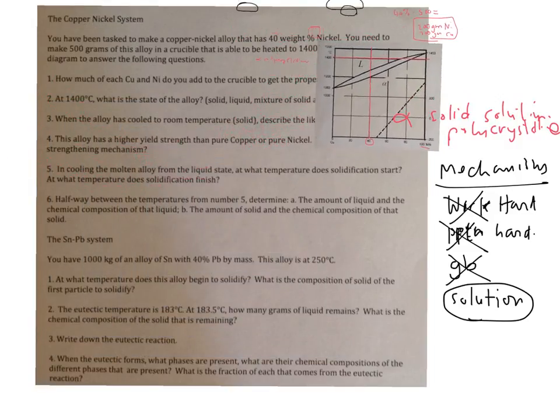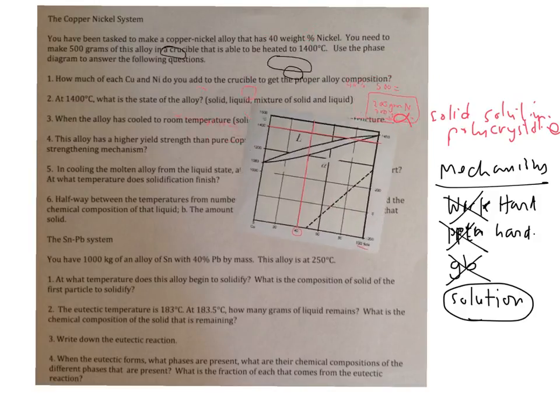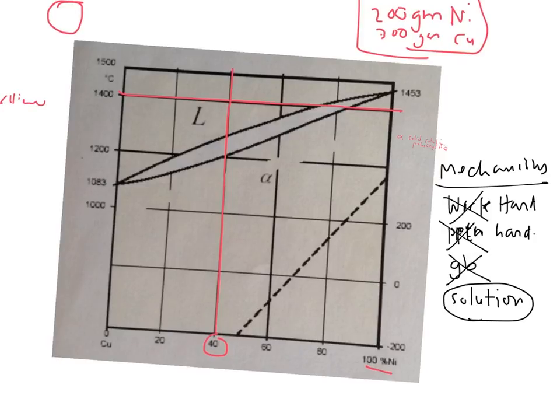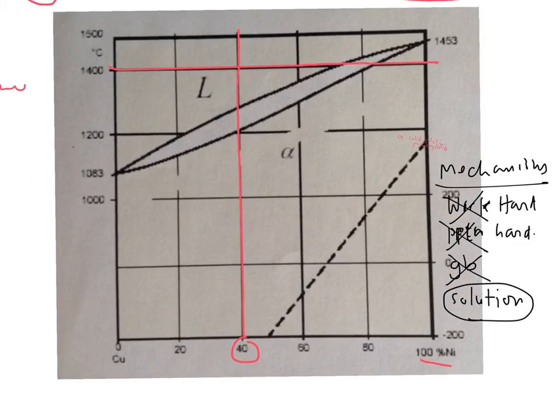Okay, so the next question is in cooling the molten alloy from the liquid state, at what temperature does solidification start? At what temperature does solidification finish? So if you look at this phase diagram, what you'll see is that at some point, you're cooling, and you enter the liquid plus alpha region that's indicated, it's white here, before you get to the fully solid phase.